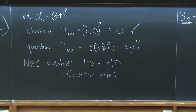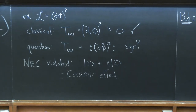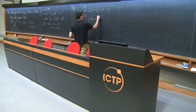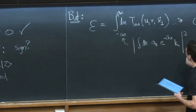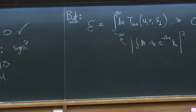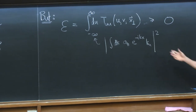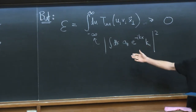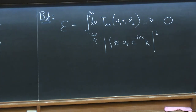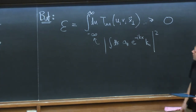The statement is that taking this null energy T_UU and integrating it over a null line — U from minus infinity to infinity — gets rid of those offending normal ordering terms that led to negative contributions in the scalar. If you plug in the quantized scalar field into this expression, then when you do the integral, you'll find something like ∫ dK |a(K) e^{-iKX} K_U|², which is manifestly a positive quantity.